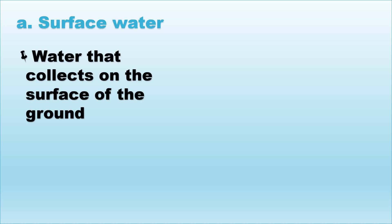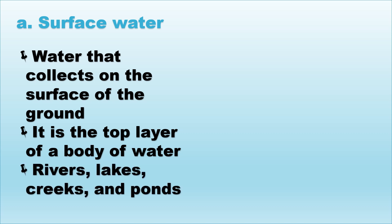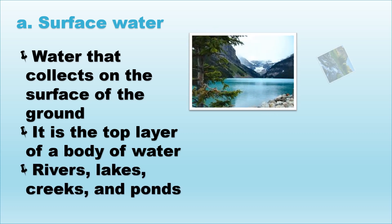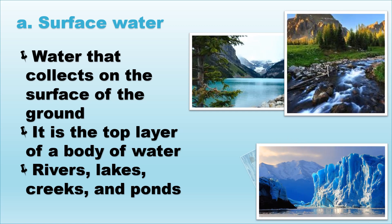Now let's go to surface water. Surface water is the water that collects on the surface of the ground. It is the top layer of a body of water. Examples are rivers, lakes, creeks, and ponds.